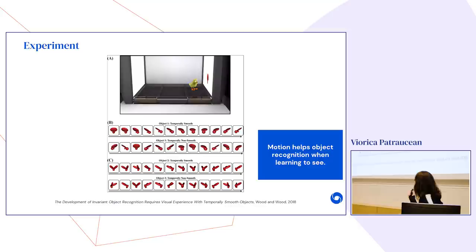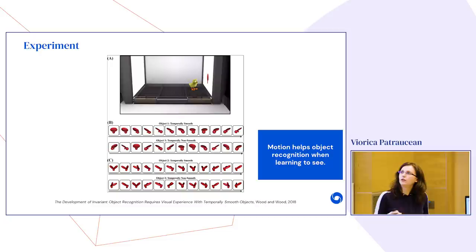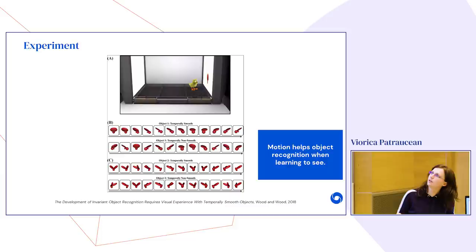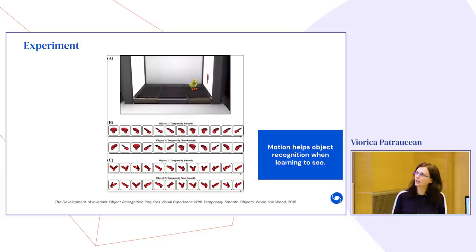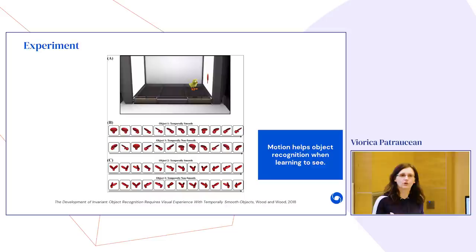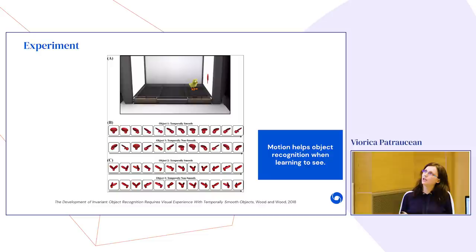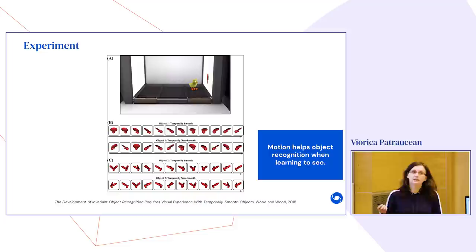The conclusion is that using videos should be the main direction for training vision models. Motion provides important cues for object recognition, and videos provide natural data augmentation — translation, scale, 3D rotation, camera motion, lighting changes — all occurring in the real world. You can train your model to learn representations robust to these kinds of changes.